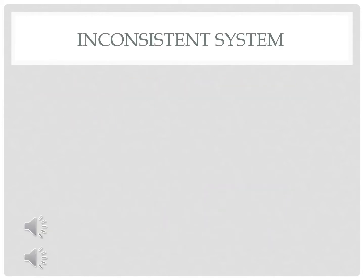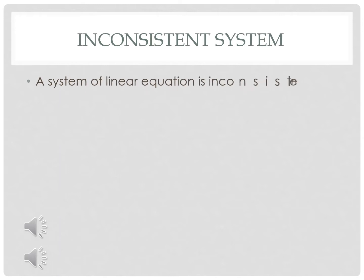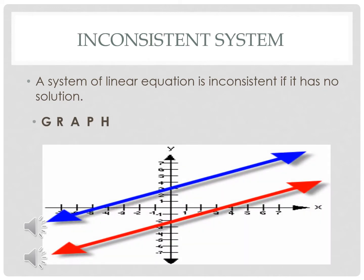The third classification is the inconsistent system. A system of linear equations is inconsistent if it has no solution. This is the graph of an inconsistent system.